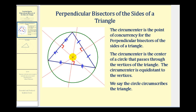Notice how all three perpendicular bisectors intersect in the same point. This point is called the circumcenter — the point of concurrency of the perpendicular bisectors of the sides of the triangle. The circumcenter is also the center of a circle that passes through the vertices of the triangle, which would be this green circle with its center here.